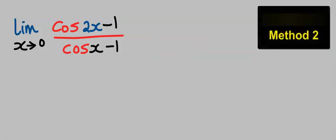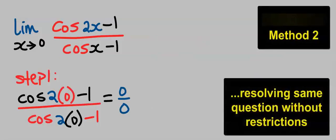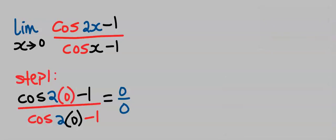Let's assume the exam question was given like this. By direct substitution in step one, we would have gotten zero over zero. And in step two, we apply L'Hôpital's rule.